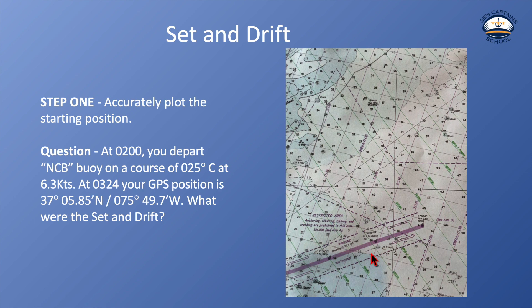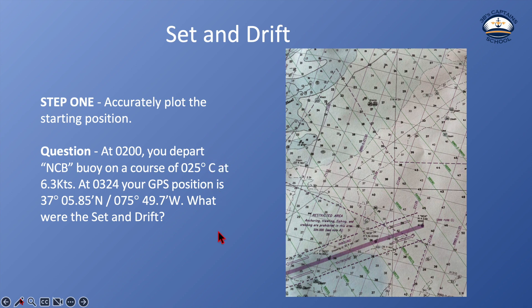Step one: we want to accurately plot our starting position. Looking at the question, at 0200 you depart the NCB buoy on a course of 025 compass. This 'C' means compass. At 6.3 knots, at 0324 in the morning, our GPS position is 37 degrees 05.85 minutes north, 75 degrees 49.7 minutes west. The question is asking: what were the set and drift?